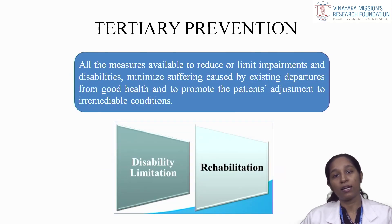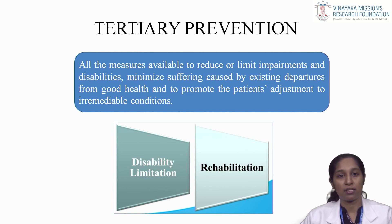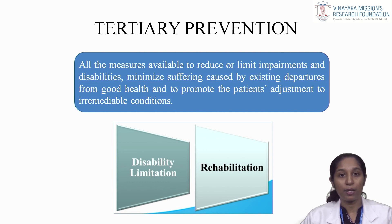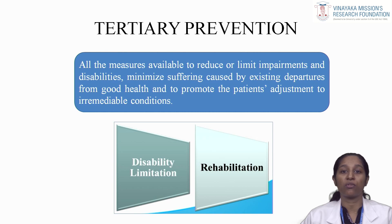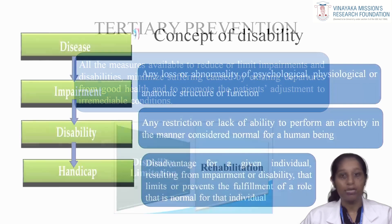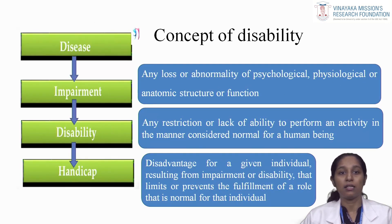Now, when the disease progress has advanced beyond its early stages, it is still possible to accomplish an intervention. This is called tertiary prevention — defined as all measures available to reduce or limit impairments and disabilities, to minimize suffering caused by existing departures from good health, and to promote patient's adjustment to irremediable conditions. Tertiary prevention seeks to reduce the impact of established disease by eliminating or reducing disability, minimizing suffering, and maximizing the potential years of quality life. The modes of intervention include disability limitation and rehabilitation. When the patient reports late in the pathogenesis phase, the modes of intervention include disability limitation and rehabilitation.